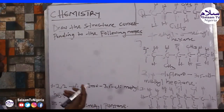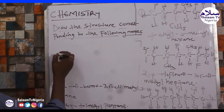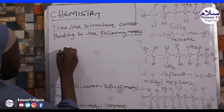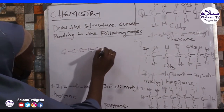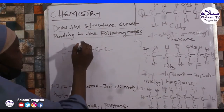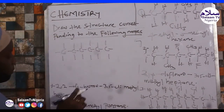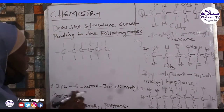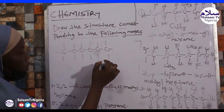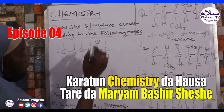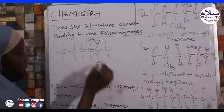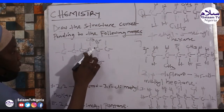Number 4: 2,2-dibromo-3,5-diethylhexane. Hexane has 6 carbons: 1, 2, 3, 4, 5, 6. So 2,2-dibromo means at position 2 we have 2 bromine atoms: 1, 2 — Br. At position 3 and position 5 we have ethyl groups.